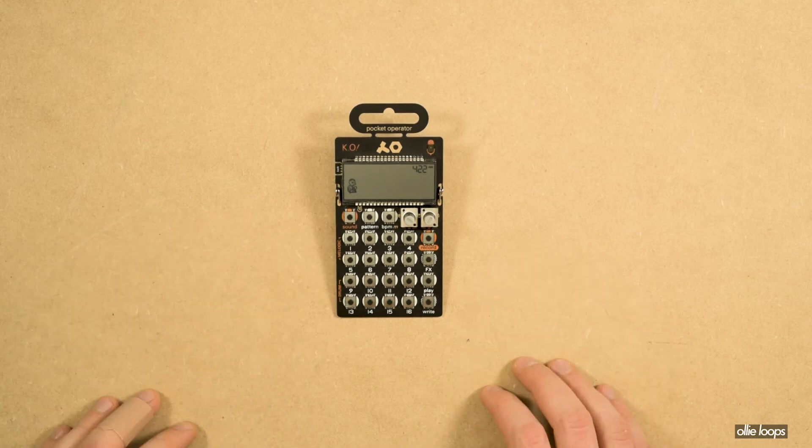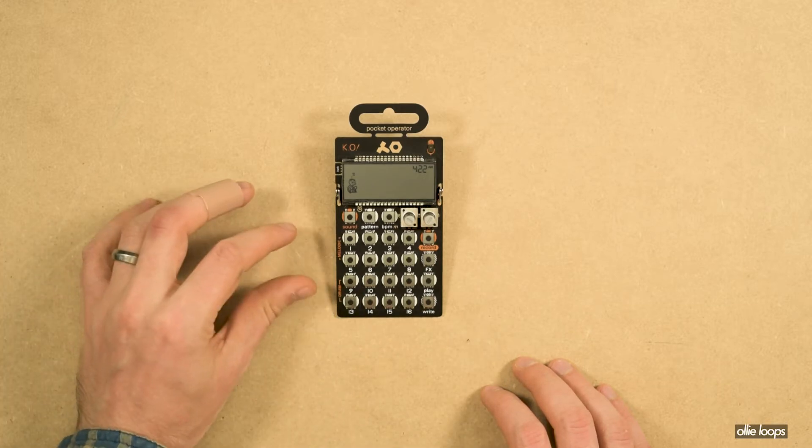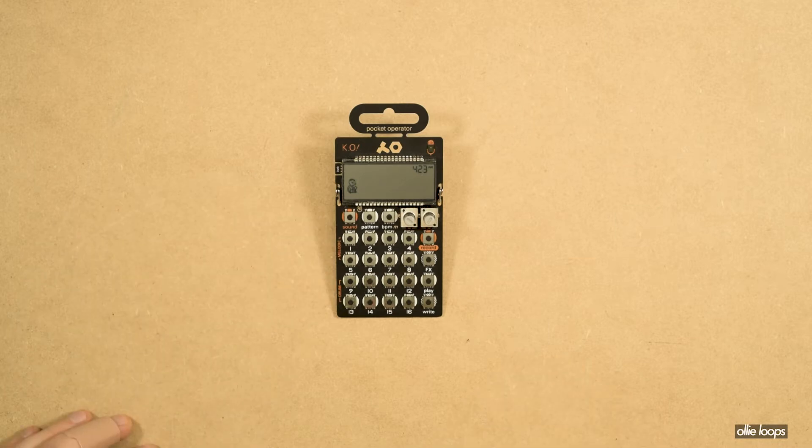If you saw my video review of the PO-33, you saw me point out that the melodic sampler is not in a chromatic scale. I was actually informed by Teenage Engineering that the melodic sampler is in a harmonic minor scale with one note added.